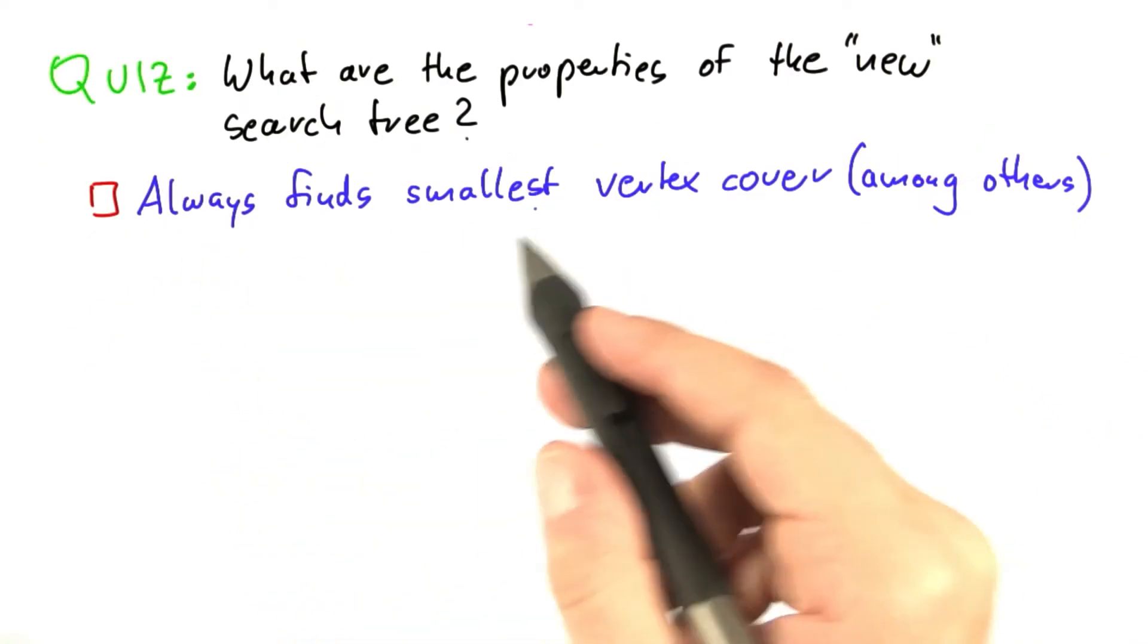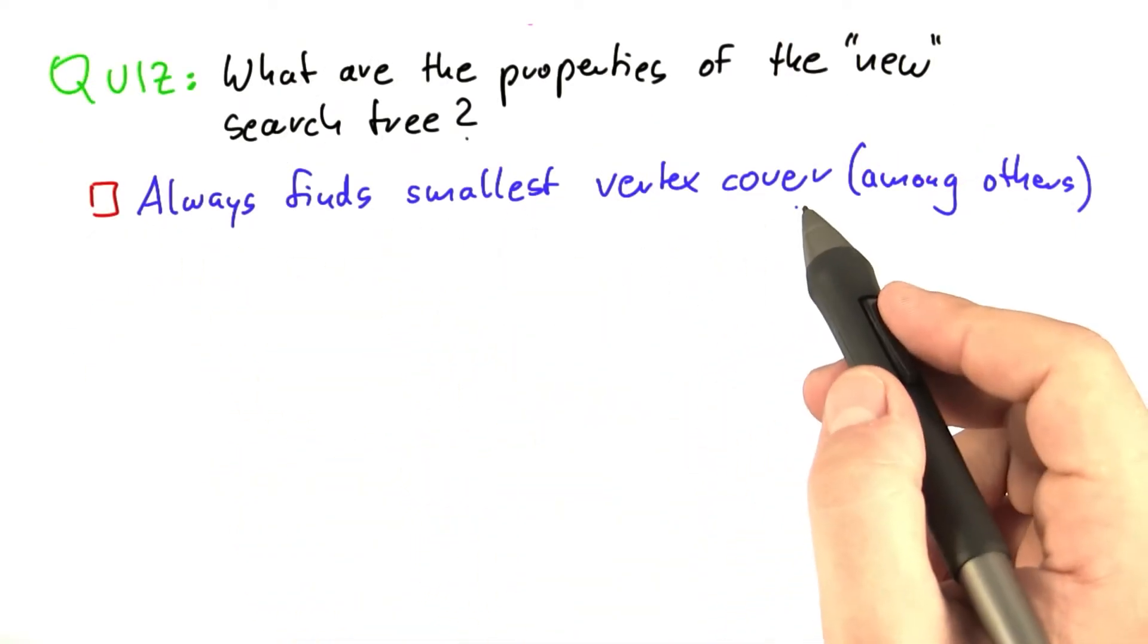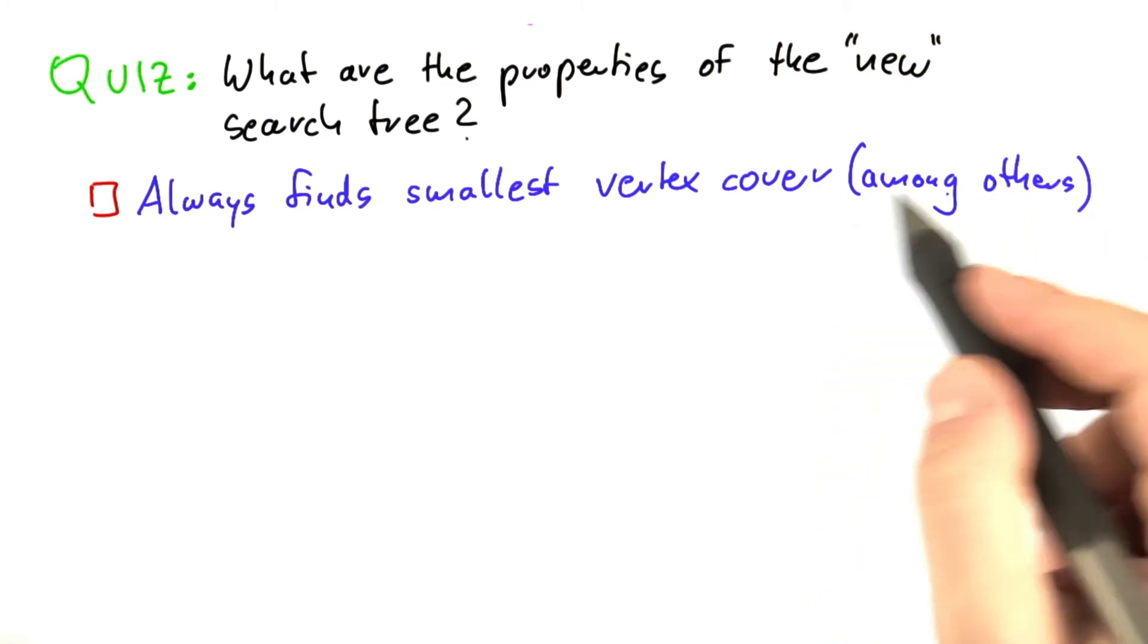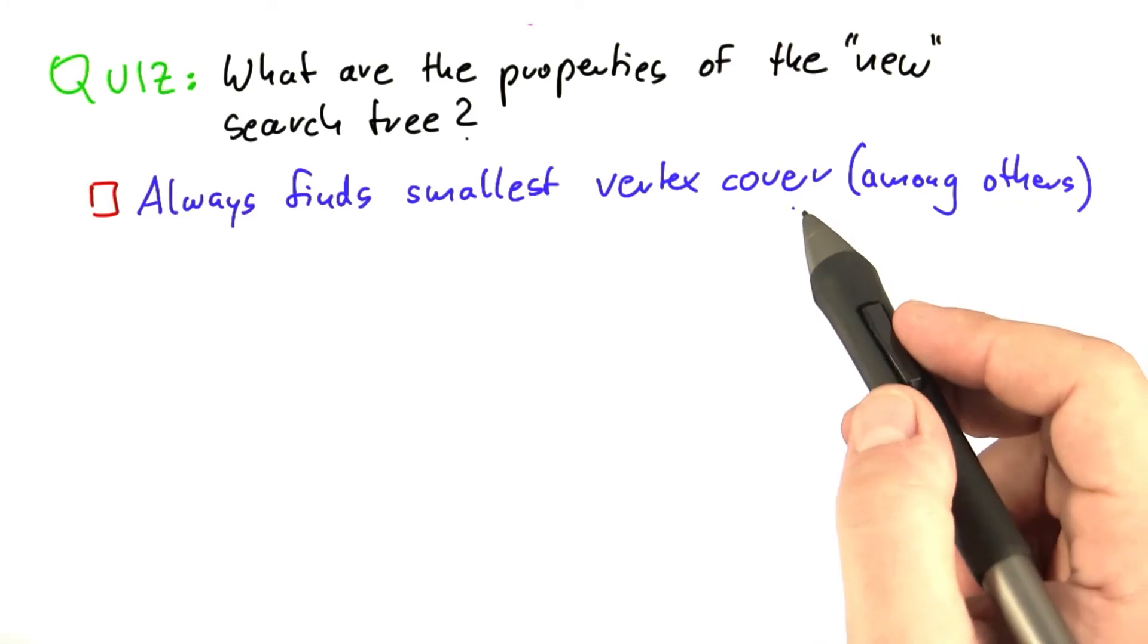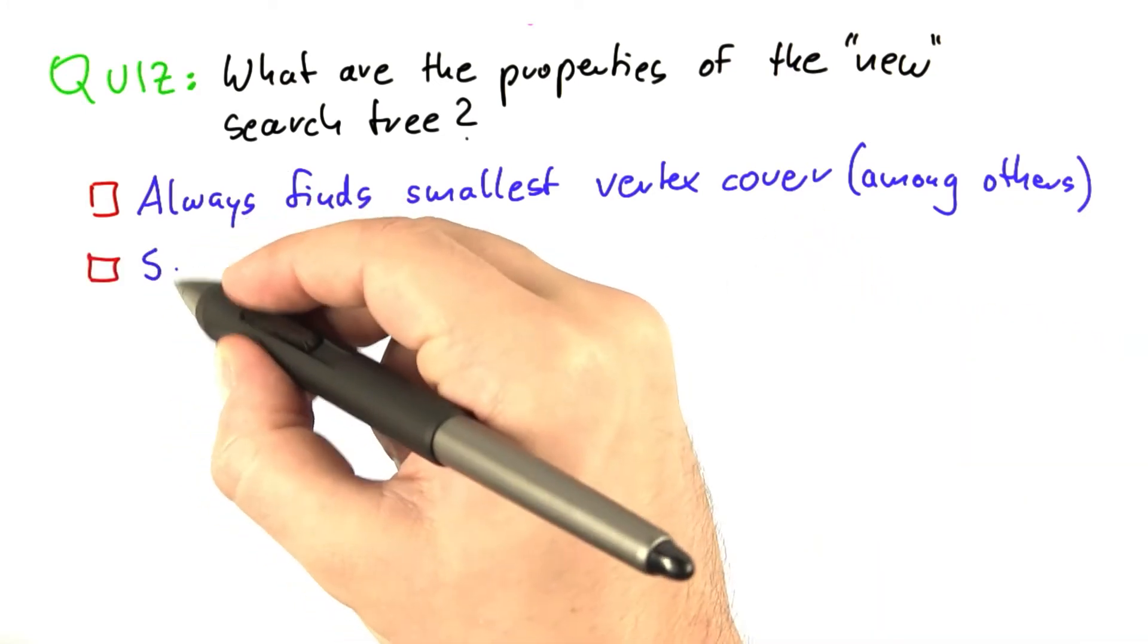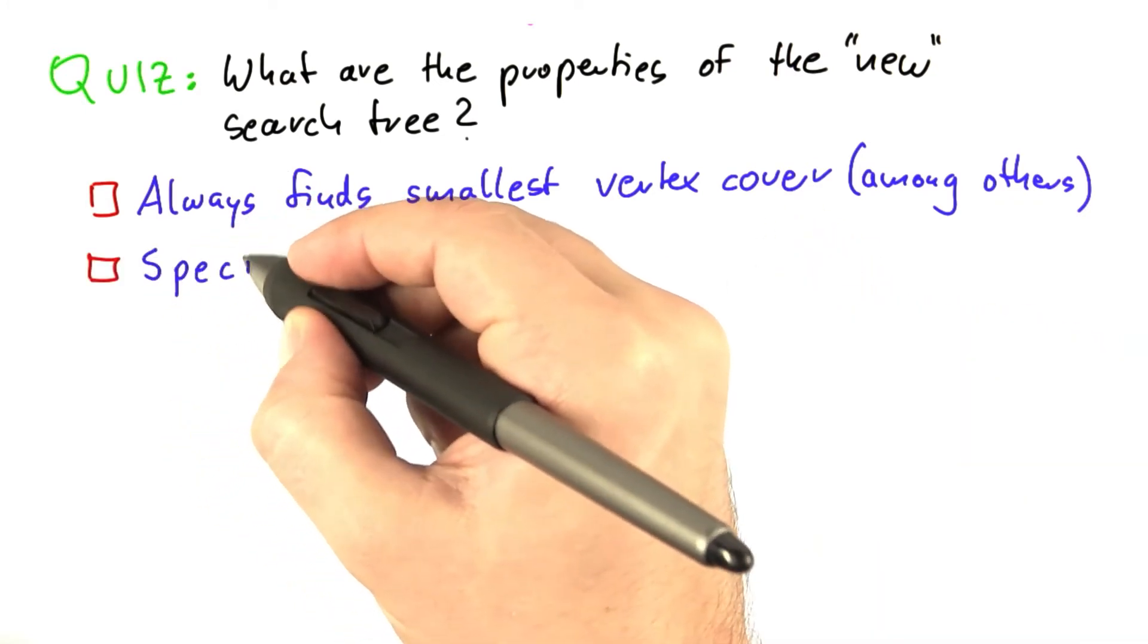So will the search tree always find the smallest vertex cover? Of course, it can also find larger ones, but will it always find the smallest possible one for any given graph? Or could there be special cases where the search tree is wrong, and we still need to fix that?